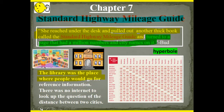Back in the Depression, the library was where people went for reference information because there was no internet to look up the distance between two cities. Instead of saying 'Hey Google' or 'Hey Siri,' people had to go to the library or buy a big reference book like the Standard Highway Mileage Guide to find out how many miles it was from one city to the next.